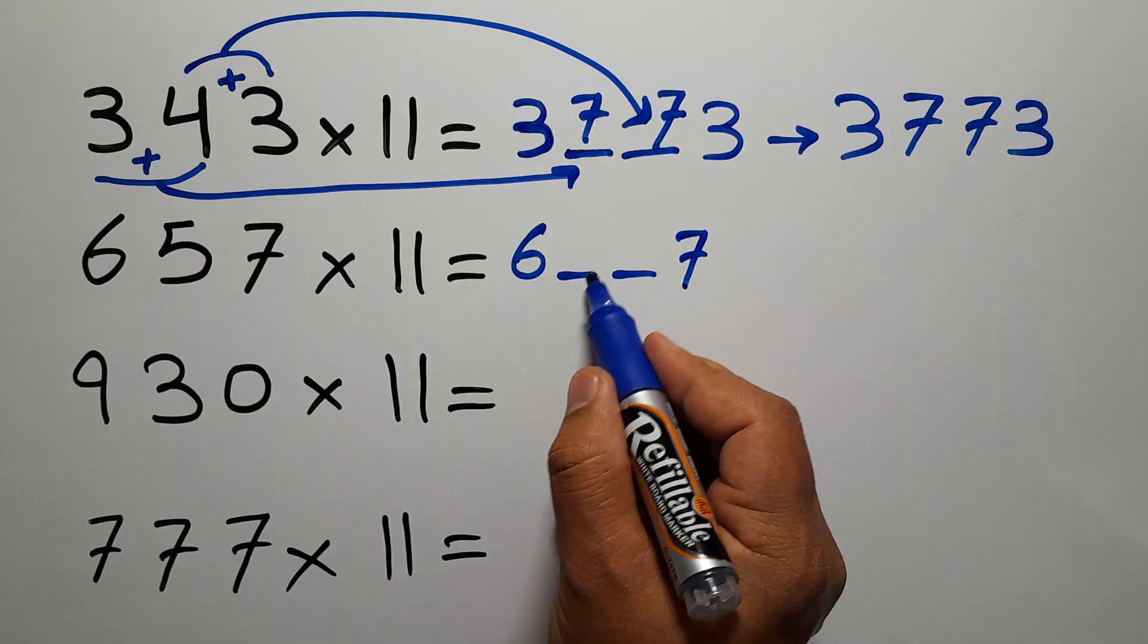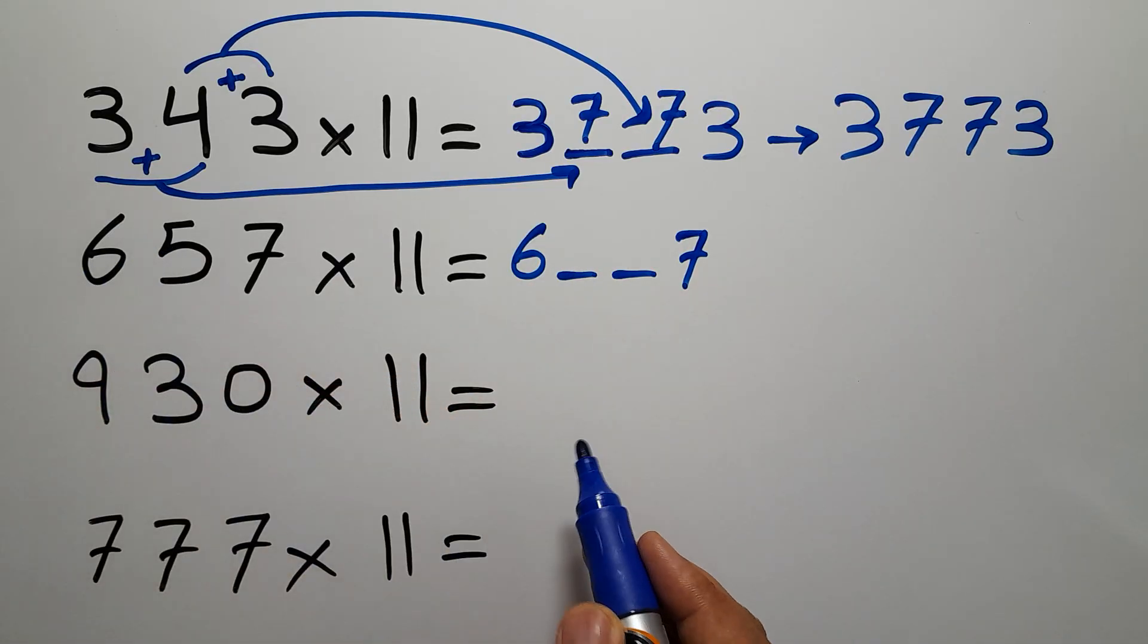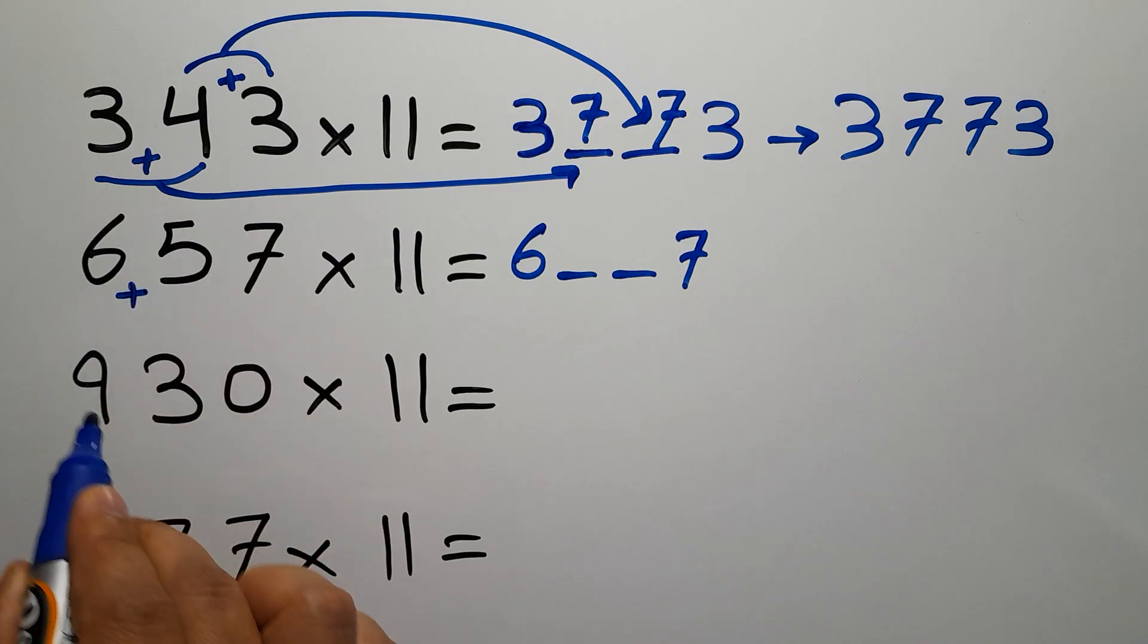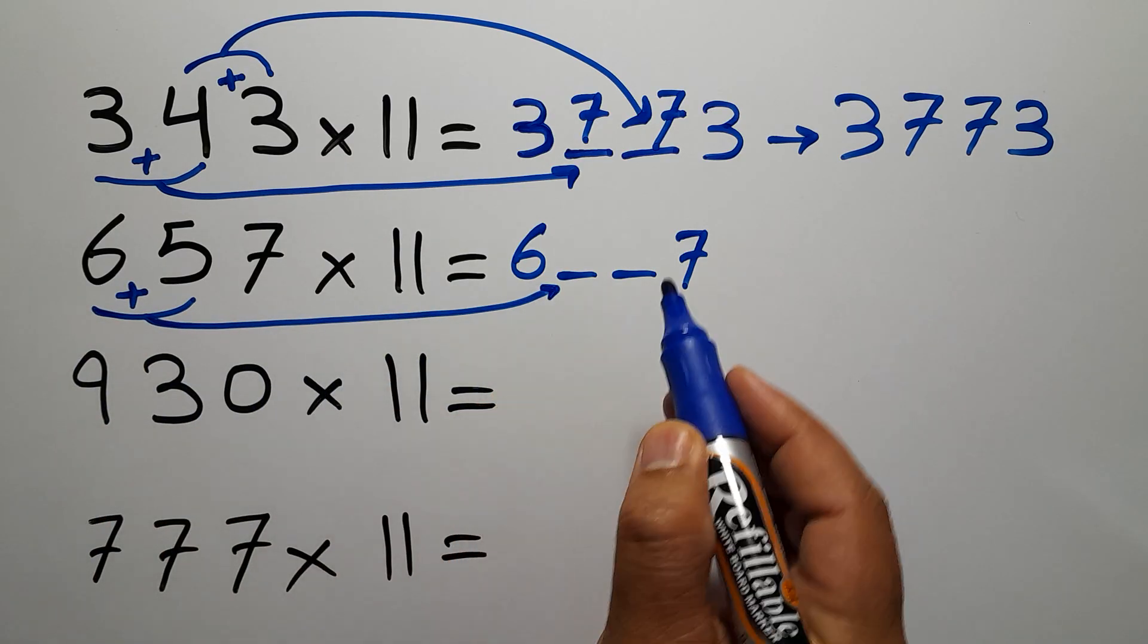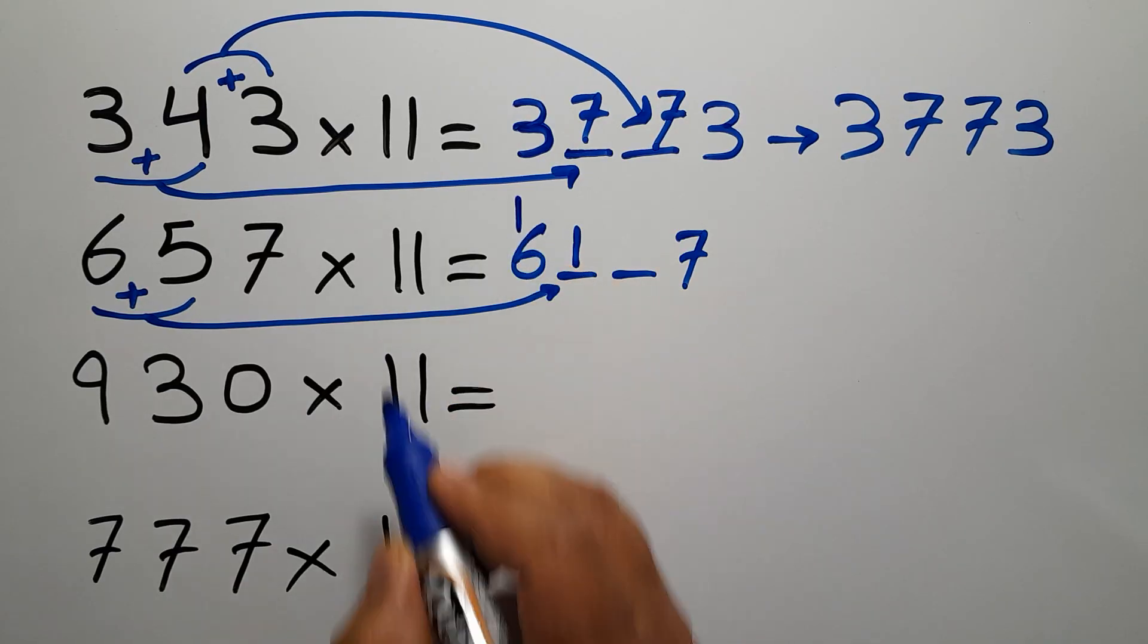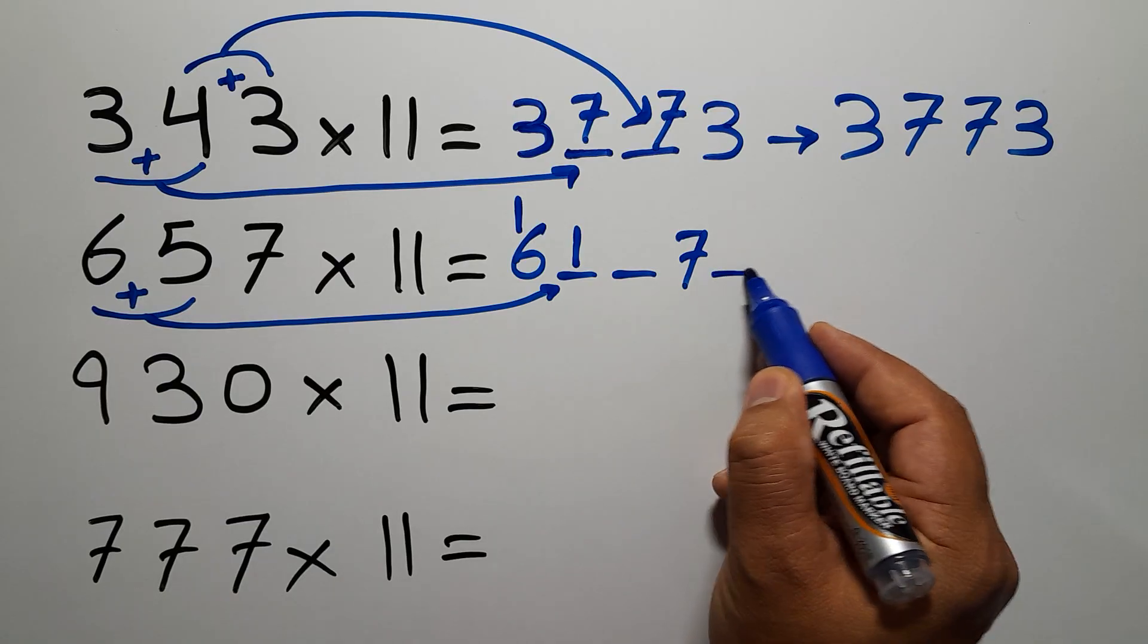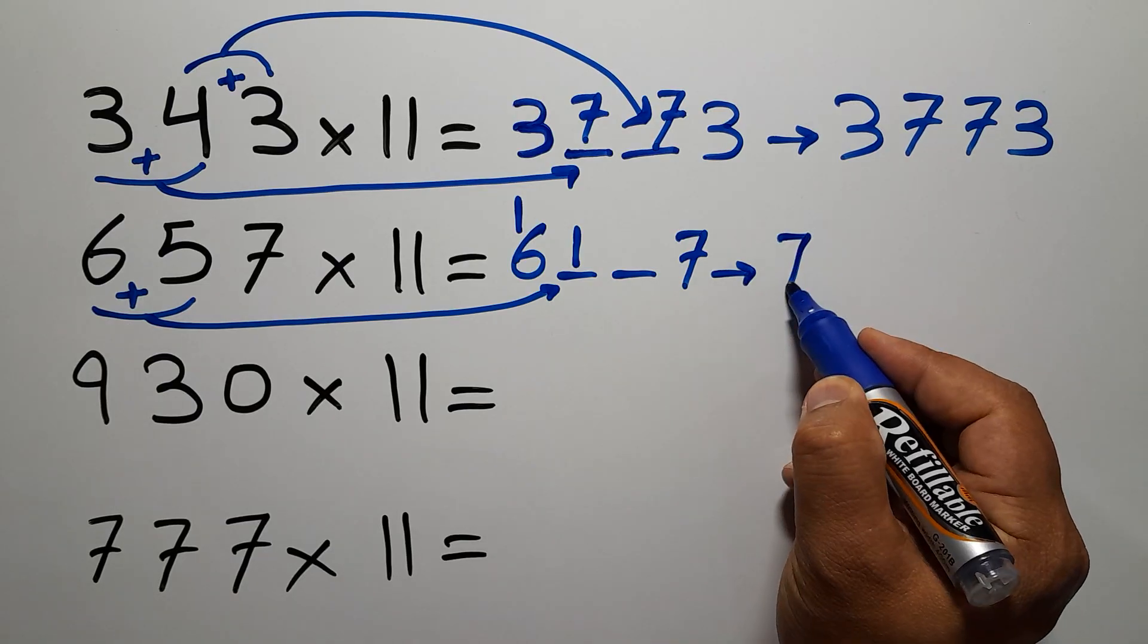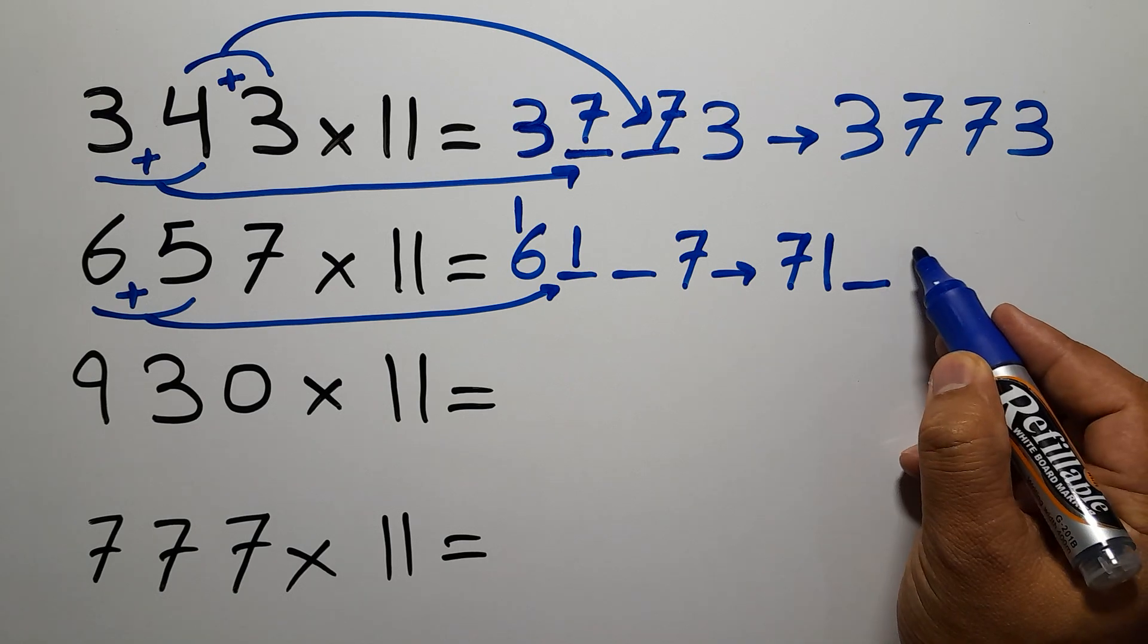To fill the first blank, we add 6 and 5, which equals 11. So we write 1 here and carry 1 here. 6 plus 1 gives us 7, so we have 7, 1, a blank space, and 7.